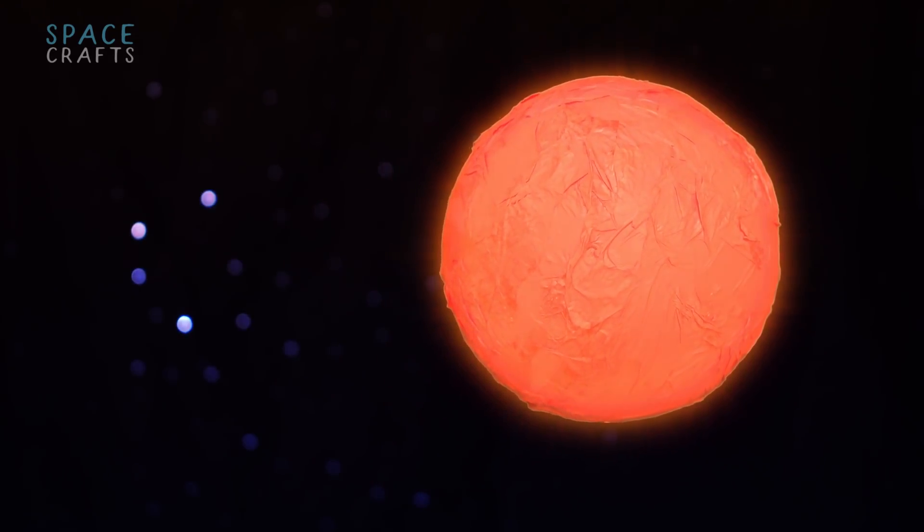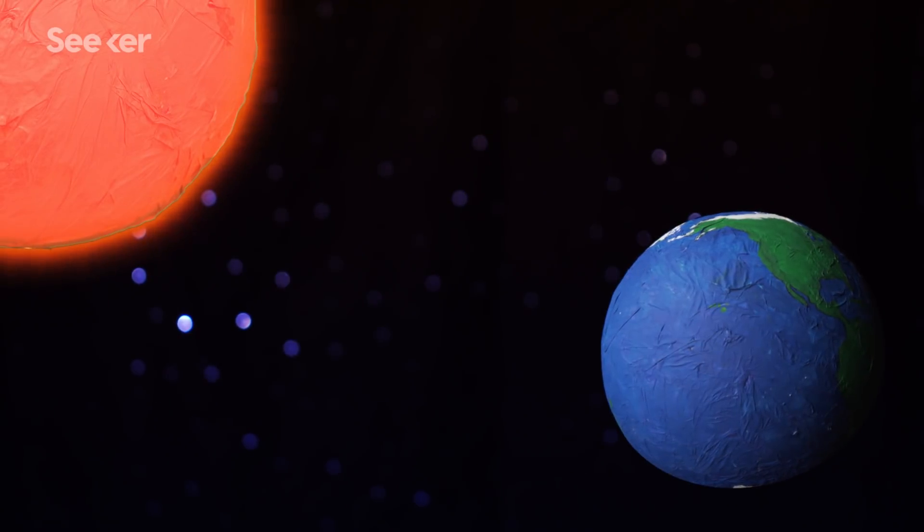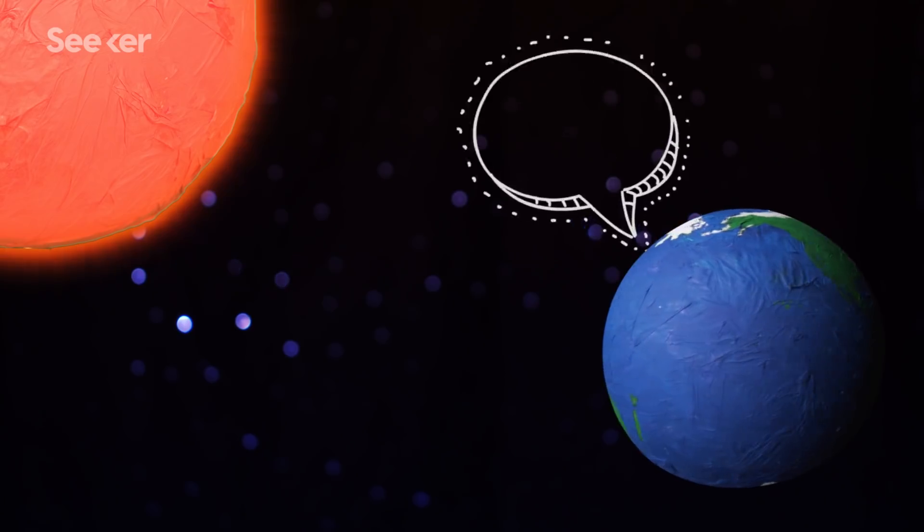Red giants are huge, reaching sizes of 62 million to 621 million miles. That's nearly 1,000 times the size of the Sun. So when our Sun turns into a red giant, life as we know it will cease to exist.